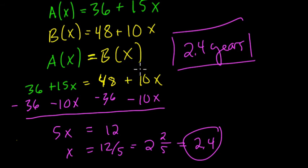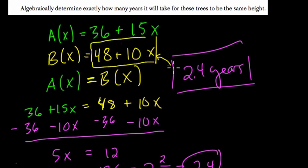And what you'll get is, let's try to plug it into this B of X, much easier to work with because we're using 10. 10 times 2.4 is 24, plus 48 is 72, so they'll both be 72 inches at that time. Plug it into both and confirm it for yourself.